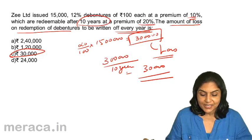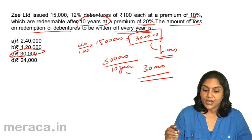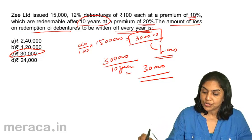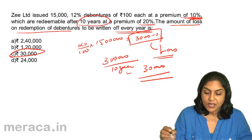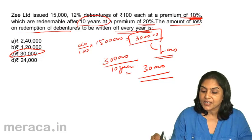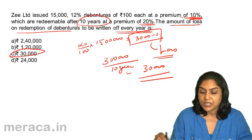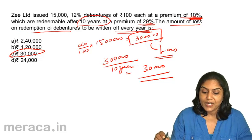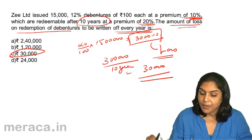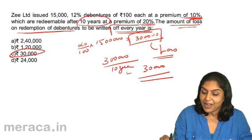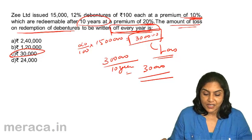Therefore, the correct answer should be C: 30,000. Please note there were two things: the debentures were issued at a premium — this premium on issue is a profit, there is no loss here. These are redeemable after 10 years at a premium of 20% — redeeming at a premium is a capital loss. The loss is 20% of 15 lakhs giving us 3 lakhs. But the question asks for the amount of loss on redemption to be written off every year.